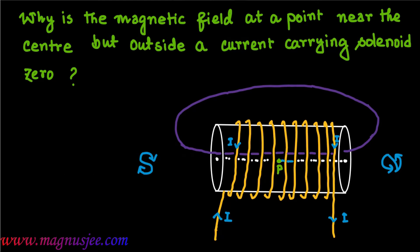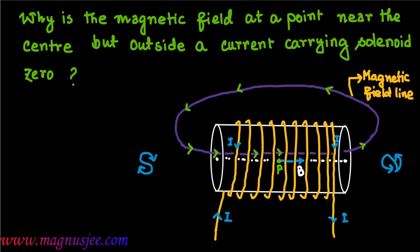We consider a point P on the axis of the solenoid. At P, the magnetic field B acts from south pole to north pole — this is the direction of the magnetic field lines. Inside the solenoid the field goes from S pole to N pole, and outside the solenoid it goes from north pole to south pole. The magnetic field line is a closed line, almost straight inside the solenoid.